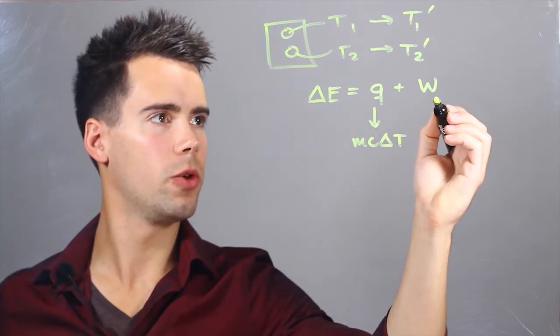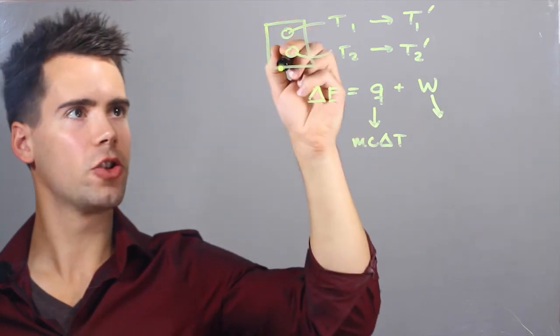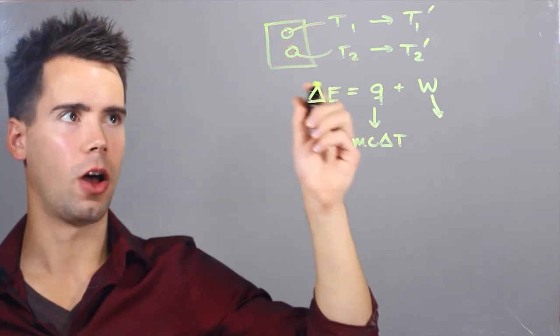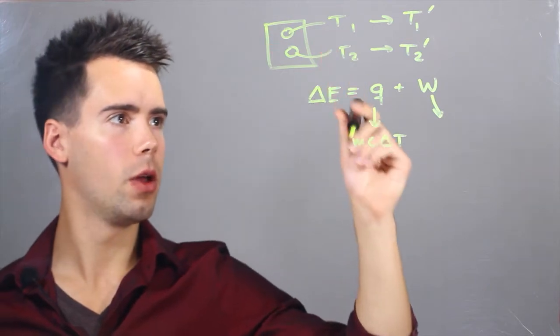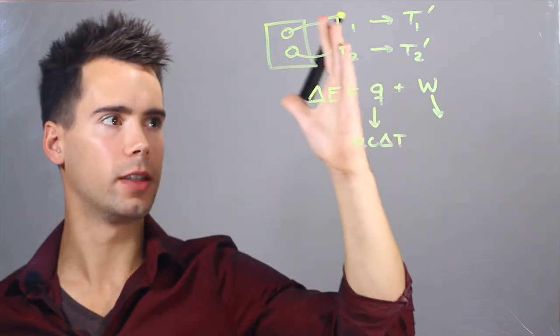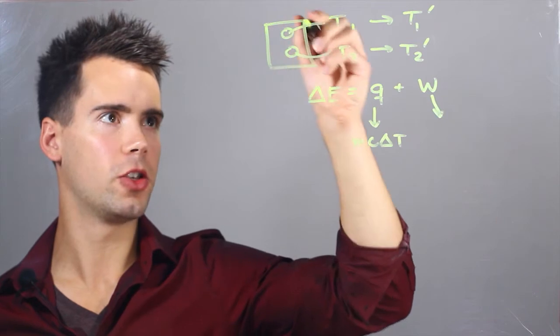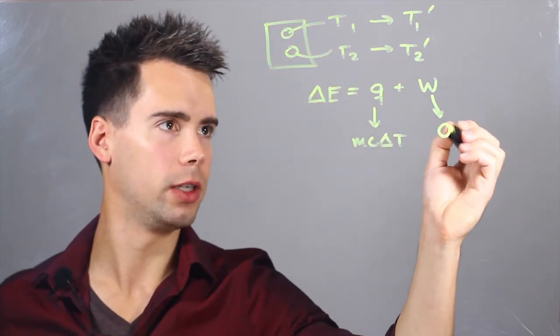The W is the work going into a system, so if we could imagine our closed system having dimensions, volume or something, and the dimensions were changing, so if you could compress it, we'd find there was some work done on the system. Now in our case, the dimensions are staying the same, so there is no work done on the system, the work is zero.